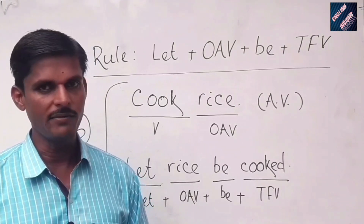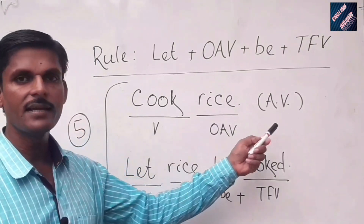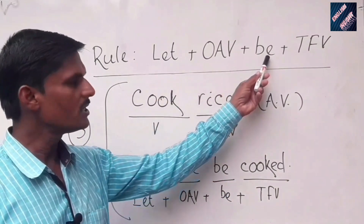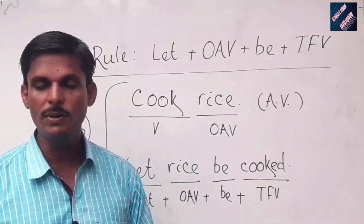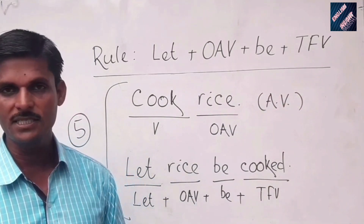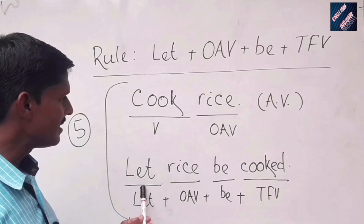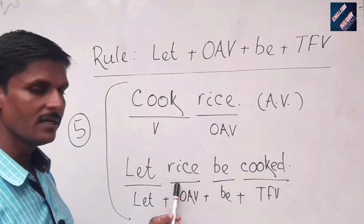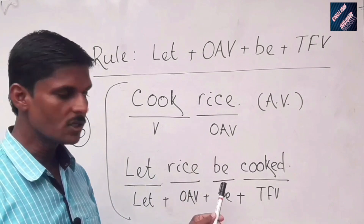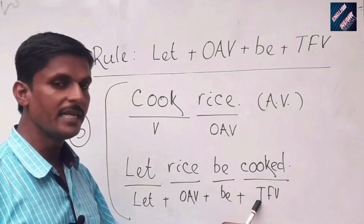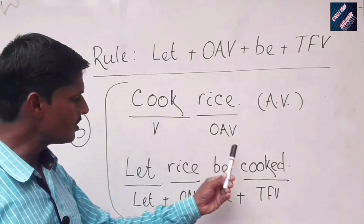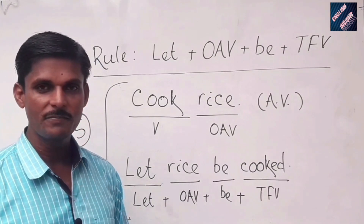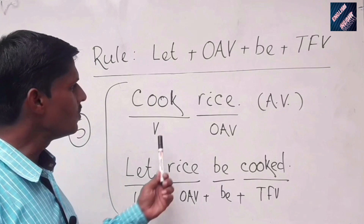Sentence number five: 'Cook rice' — active voice. Applying the rule: first 'let,' then 'rice' as the OAV, then 'be,' and the third form of 'cook' is 'cooked.' So the passive voice is 'Let rice be cooked.' Active voice: 'Cook rice.' Passive voice: 'Let rice be cooked.'